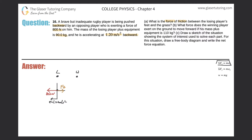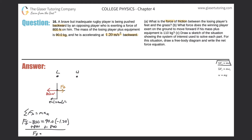Now let's look at the sum of forces in the x direction, equal to mass times acceleration. The force of friction is positive because of the direction it's pointing — the player is being pushed backwards, so I have to represent that appropriately. The 800 newton force is negative since it points backwards. Plugging in: friction minus 800 equals 90 times negative 1.20. Adding 800 to both sides: friction equals 90 times negative 1.2 plus 800, which gives 692. So the force of friction on the loser is 692 newtons.